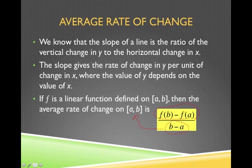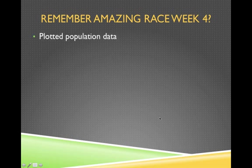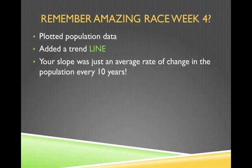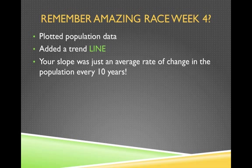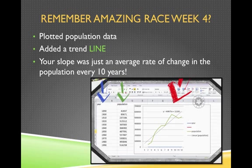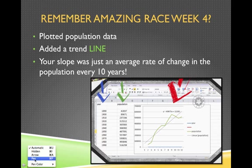Have you guys used this already this semester? Absolutely — remember Amazing Race week four? You plotted population data, added a trend line, and your slope was just the average rate of change in the population every 10 years. Thanks to Team Tar Heels — I borrowed their glog data — you plotted this data, put a trend line on it, got an equation, and talked about the change in population every 10 years. For the city they used, the population on average went up 49,875 every decade.